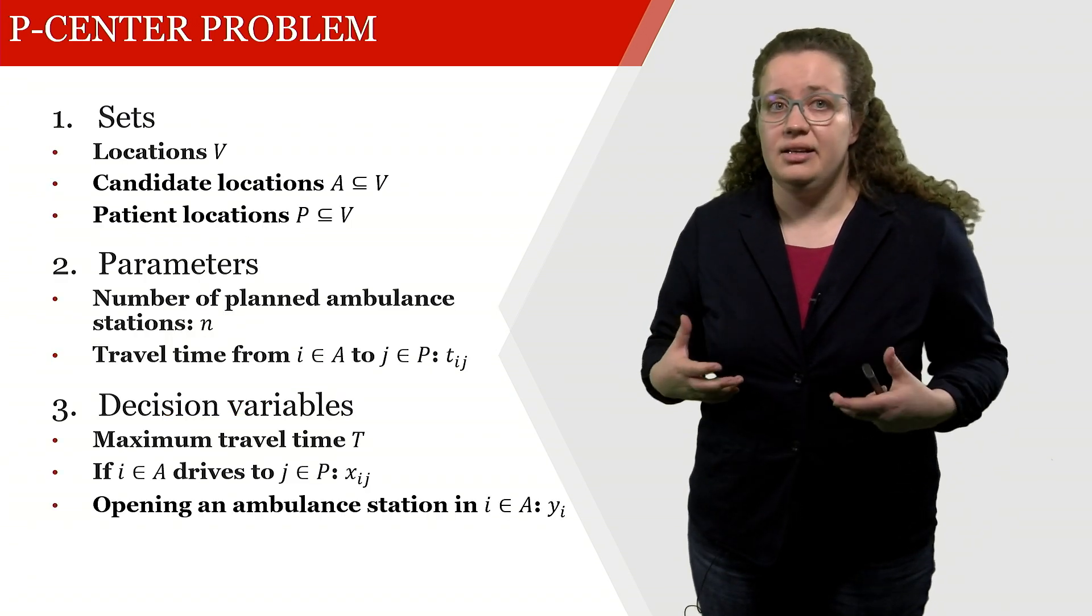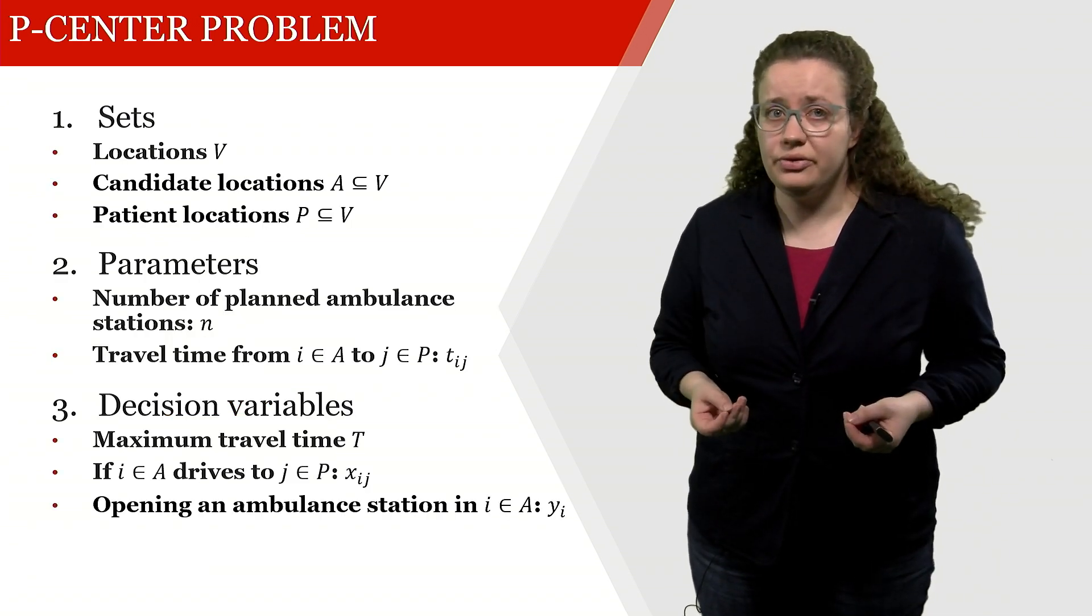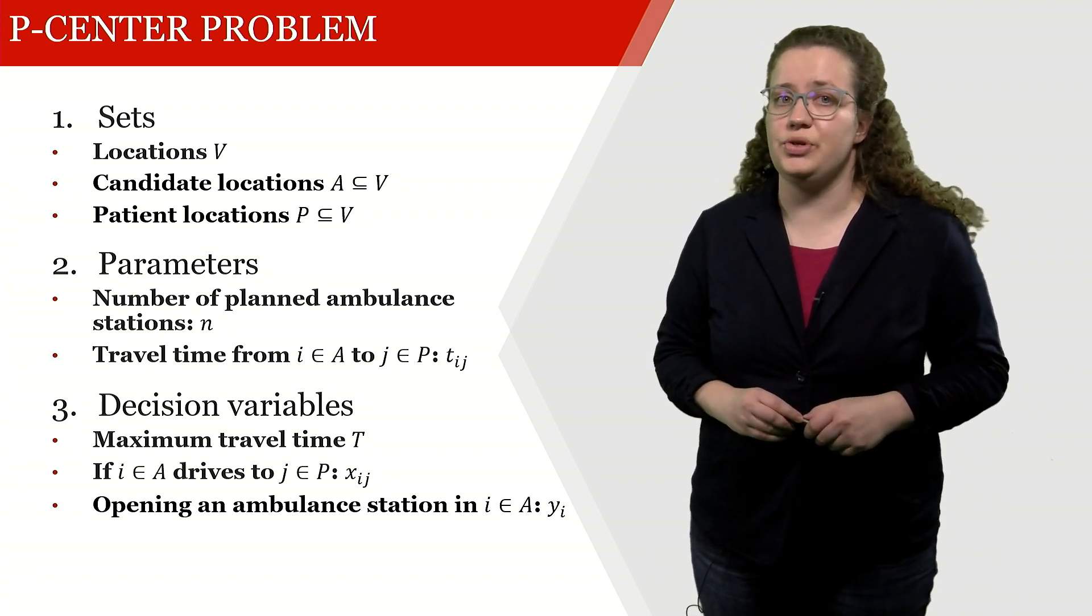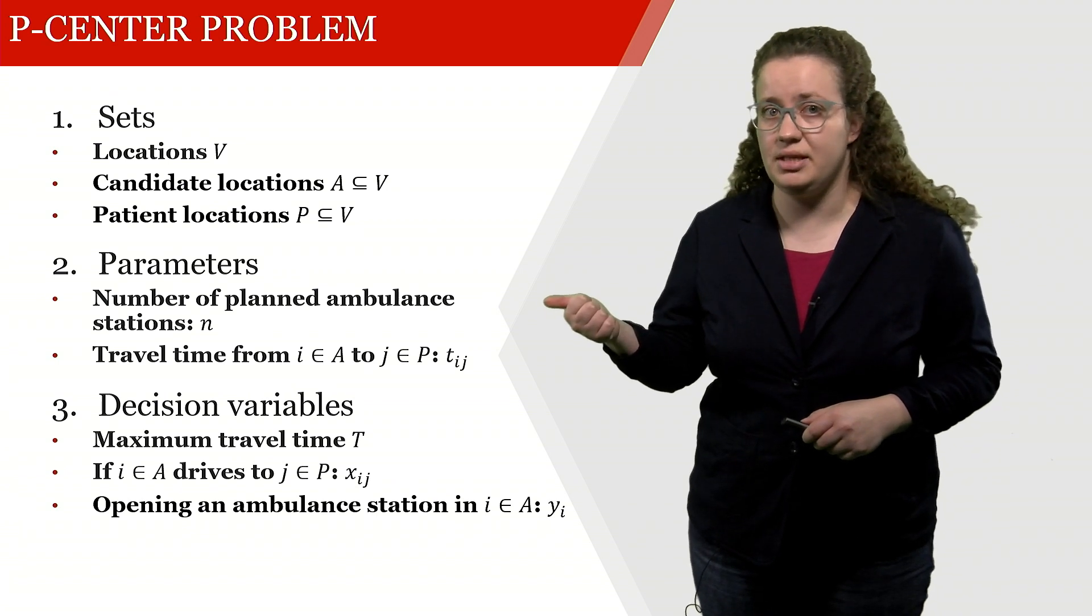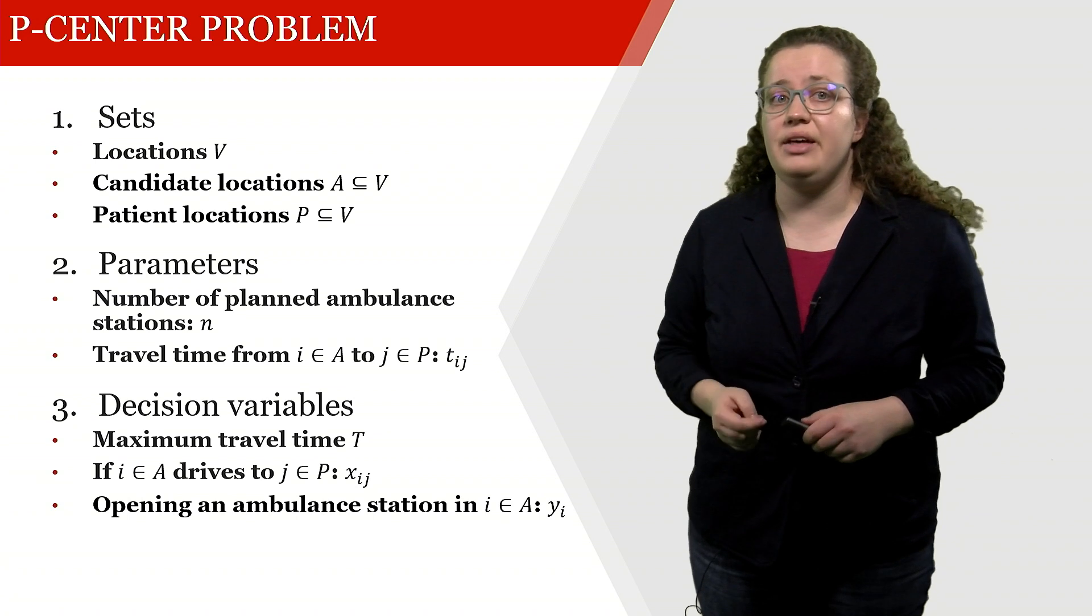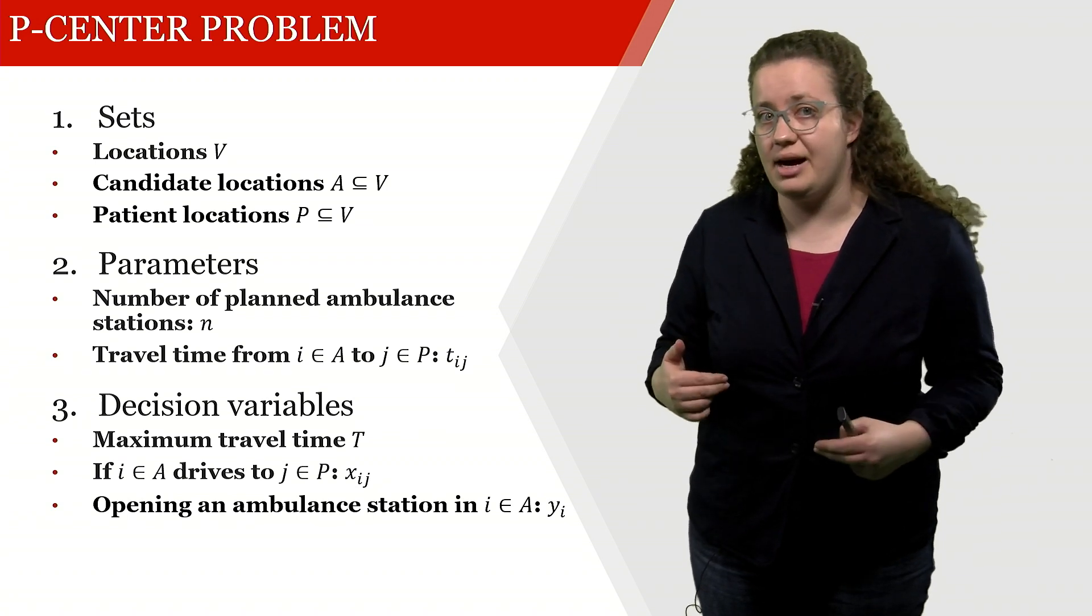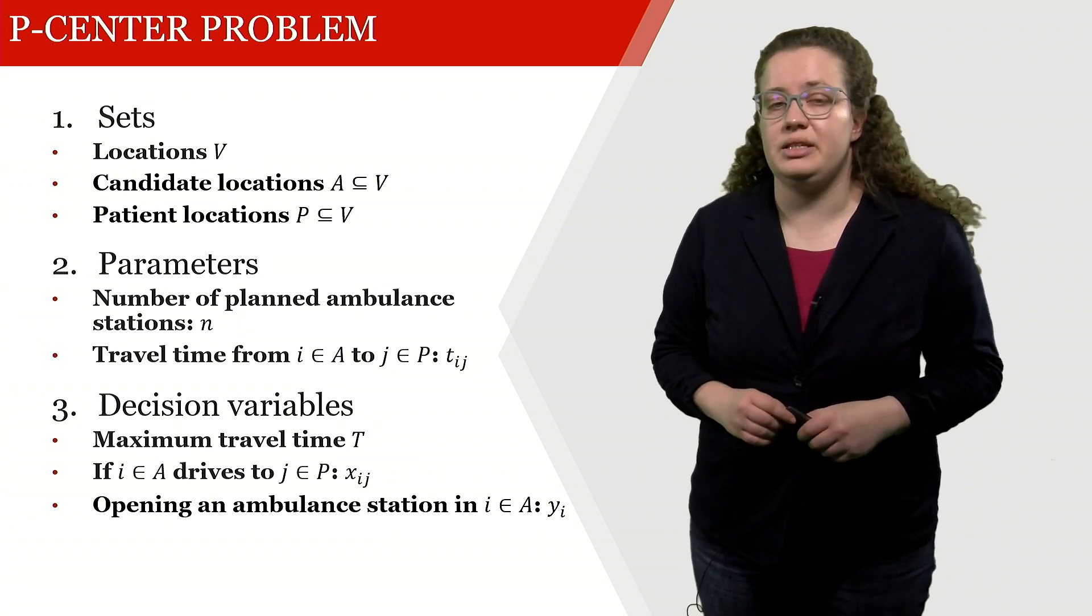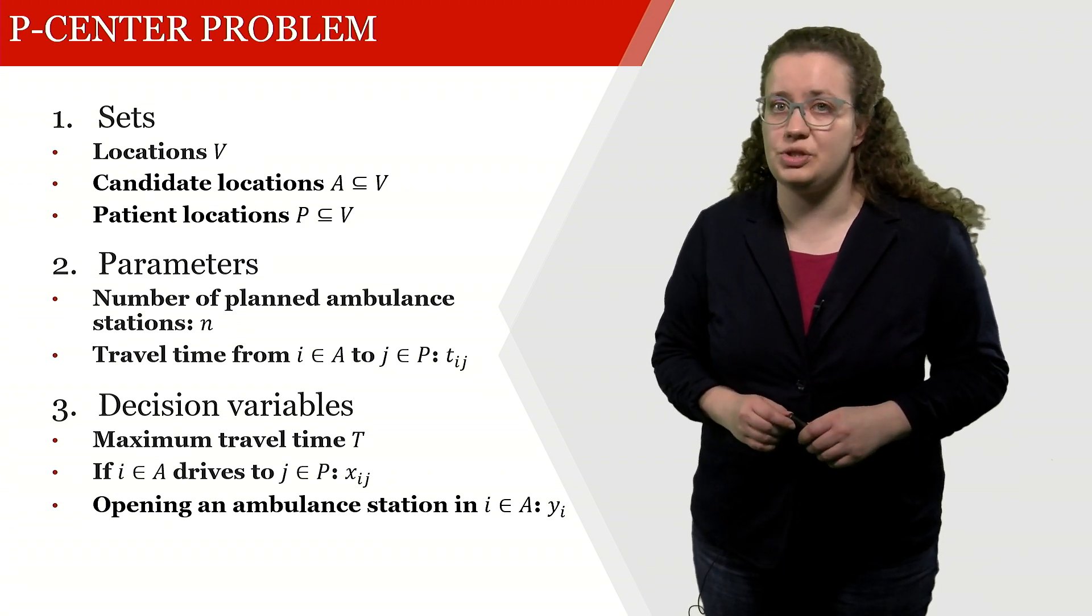And lastly, let's look into the decision variables. So we've already seen the set and parameters but now we also have decision variables. First of all, we have the maximum travel time t which is a decision variable. Then we have an opening decision for ambulance location which is yi.